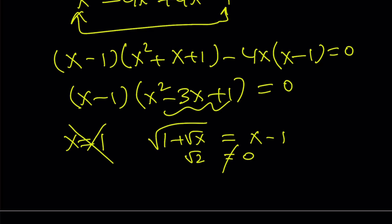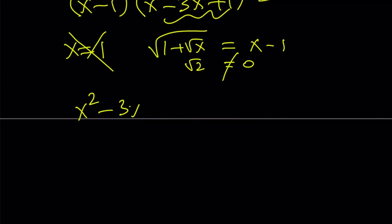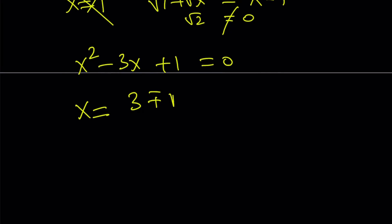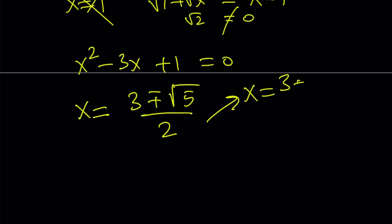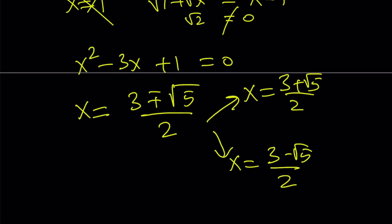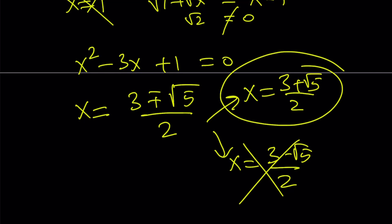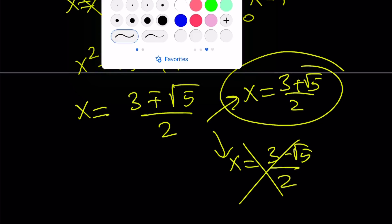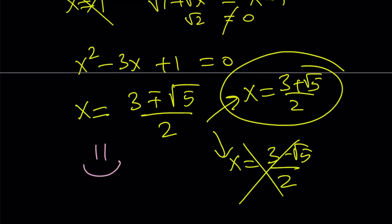The remaining equation is quadratic, giving two solutions via the quadratic formula: (3 plus or minus root 5) over 2 — exactly the same results as the first method. But remember, x needs to be greater or equal to 1. The second solution is not greater than or equal to 1, so we reject it. We end up with one solution again: x equals (3 plus root 5) over 2. This brings us to the end of the video — thank you for watching, I hope you enjoyed it. Please like, subscribe, and comment. I'll see you tomorrow with another video.